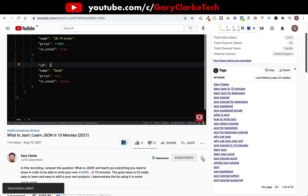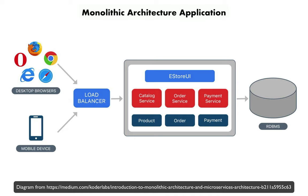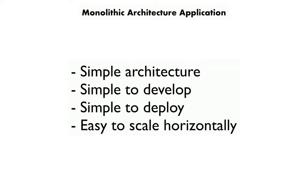That's what we're going to build in this one, but first let's have a look at what microservices are and how they can benefit us. The application on your screen is built using monolithic architecture, which means it is a single-tiered application where everything is contained in a single repo hosted on a single platform. The benefits of this approach are that it is a simple architecture, simple to develop, simple to deploy, and can easily scale horizontally by running multiple copies behind a load balancer.